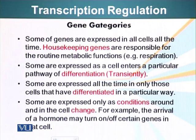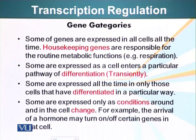Some genes are expressed all the time in those cells that have differentiated into a particular type of cell. For example, our neurons make a protein called tau. This protein is specific for neurons — it is basically a protein that bundles microtubules and will not be found in all cells. Some genes are expressed only when it is required that cells make that particular protein, and this is one of the types of genes we will be most interested in.